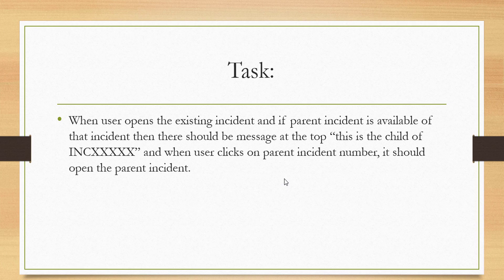The message will show that this is the child of that particular incident, and when the user clicks on the parent incident number it should open that particular incident. So the requirement is: if a user opens any incident and that incident has a parent, it will show the message on top that this is the child of this particular incident, and that parent incident number will be clickable. Without any delay, let's go to the instance and implement it.